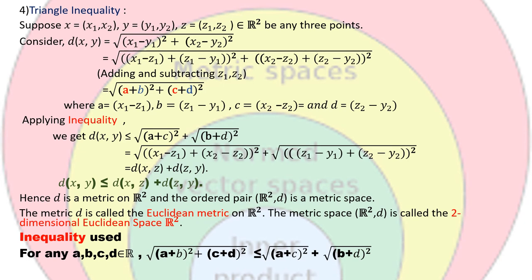Next is to verify the triangle inequality. We suppose three points in R2: x equals (x1, x2), y equals (y1, y2), and z equals (z1, z2). Considering d(x,y), we have the square root of (x1 minus y1) squared plus (x2 minus y2) squared. Adding and subtracting z1 and z2, and substituting a = x1 minus z1, b = z1 minus y1, c = x2 minus z2, d = z2 minus y2, we apply the key inequality shown at the bottom of the screen: the square root of (a+b) squared plus (c+d) squared is less than or equal to the square root of (a squared plus c squared) plus the square root of (b squared plus d squared).